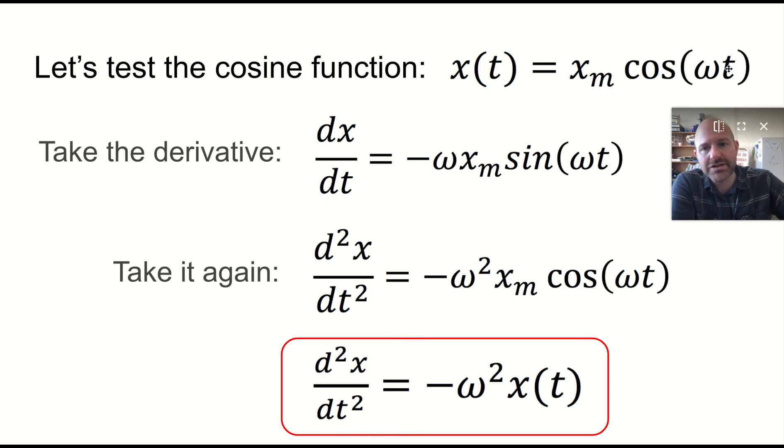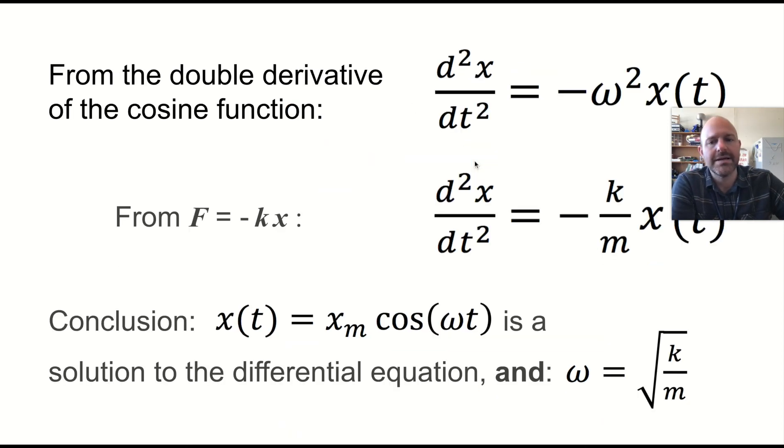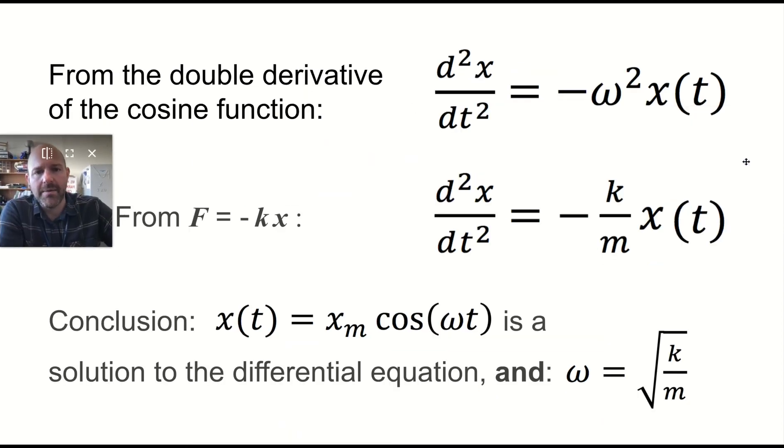So we can test each of them. The cosine function gives it to us d squared x dt squared equals negative omega squared x as a function of time. And if we do all of that, we end up with d squared x dt squared equals negative K over MX there. And of course, what is that? That's just the acceleration. That's the mass. It all works out nicely.